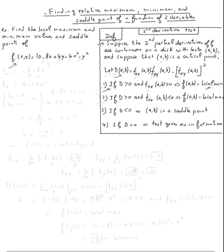The first thing we need to do is find the critical points. We calculate the partial derivative with respect to x and the partial derivative with respect to y, set both of them equal to zero, and solve for x and y.